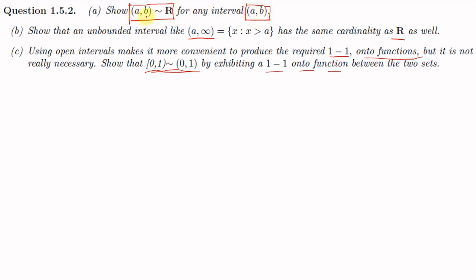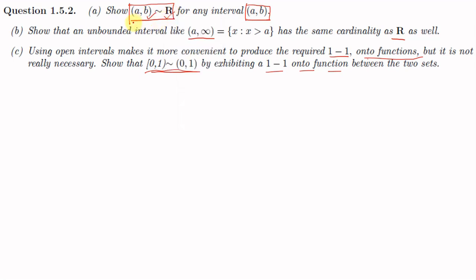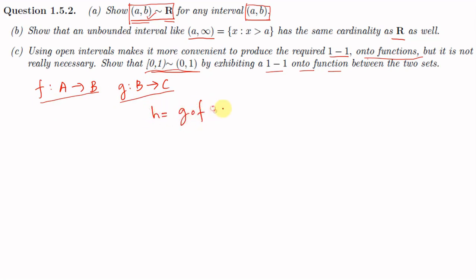We have to show that the open interval (a, b) has the same cardinality as ℝ. To do this, we need to show there exists a bijection θ from (a, b) to ℝ. We use the idea that if f: A → B and g: B → C are both 1-1 and onto, then h = g∘f from A to C is also 1-1 and onto.